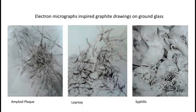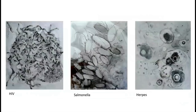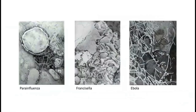The last portion of the exhibition was drawings on ground glass — I ground the glass with carborundum, a gritty compound, then used graphite pencil, sometimes drawing on mylar to achieve multiple layers. The way I framed these became an important part of the exhibition. The pathogens I drew included chlamydia, plague, pneumonia, HIV, salmonella, herpes, parainfluenza, Francisella, and Ebola — and notably, Ebola broke out right before my show was going to open in 2014.